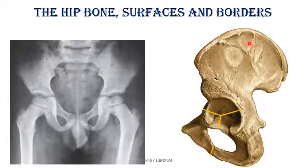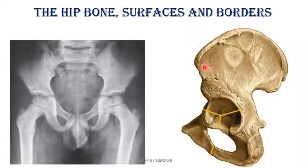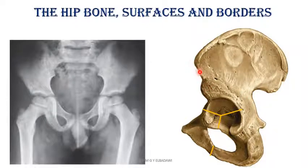As an adult hip bone, it has two surfaces: outer and inner surface. The inner surface will be divided into two parts: iliac fossa and sacro-pelvic surface. Looking at the outer surface, that is the gluteal surface of the ilium. The upper border is called the iliac crest. There is also the anterior border and the posterior border of the ilium.